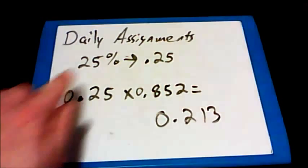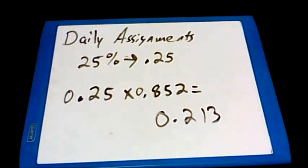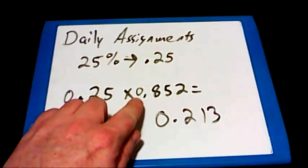Remember that 25% changes to 0.25 as a decimal. We need to do the same thing for his raw score of 85.2% and change that to a decimal, being 0.852.